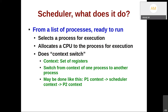What does the scheduler do? The scheduler selects from a list of ready-to-run processes a process for execution, allocates the CPU to that process, and then performs what we call a context switch. The context is a set of registers. Switching involves going from process 1's context to the scheduler's context and then to process 2's context — and we have seen precisely how Xv6 does this.